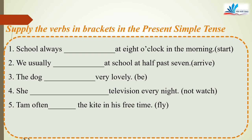Supply the verbs in brackets in the present simple tense. You have 1 minute to do this exercise. Number 1: School always starts at 8 o'clock in the morning. Chủ ngữ School là danh từ số ít, câu trần thuật, nên động từ thêm S. So the correct answer is starts.